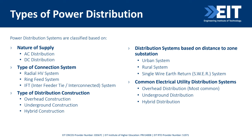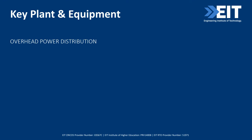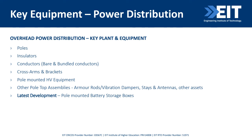Now, very quickly, let's look at the key plant and equipment for overhead power distribution. The main equipment for overhead systems includes poles, insulators, conductors, cross arms, pole-mounted HV equipment, armor rods, antennas, and other latest developments.